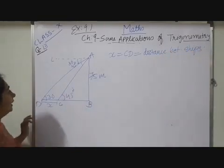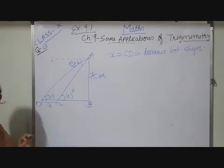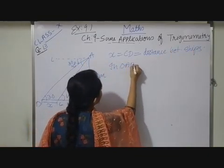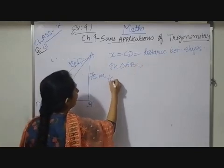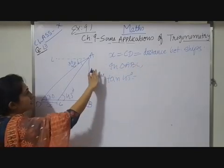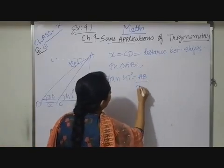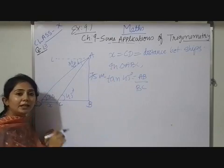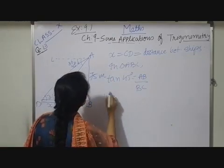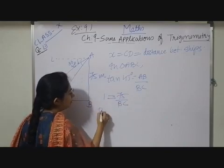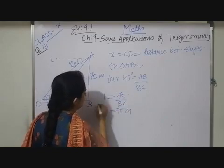Now, here in triangle A, B, C I will apply tan ratio. So, in triangle A, B, C while I will apply tan ratio I will get tan 45 degree which is equals to opposite side A, B upon B, C. So, A, B upon B, C tan 45 degree is 1. So, 1 which is equals to A, B value also known 75 upon B, C. So, B, C is equals to 75 meter.